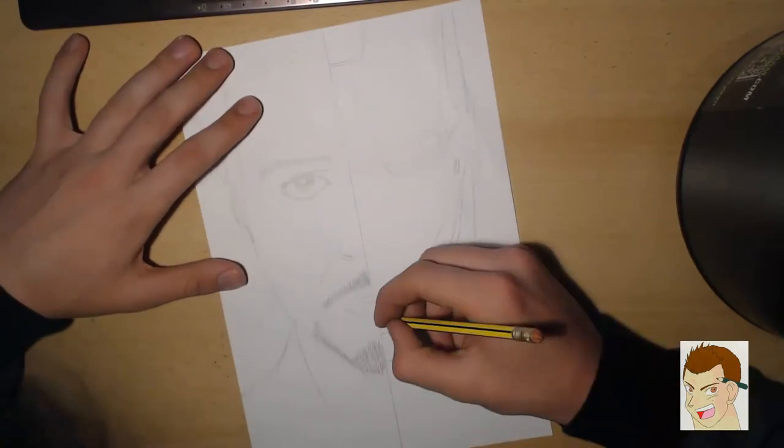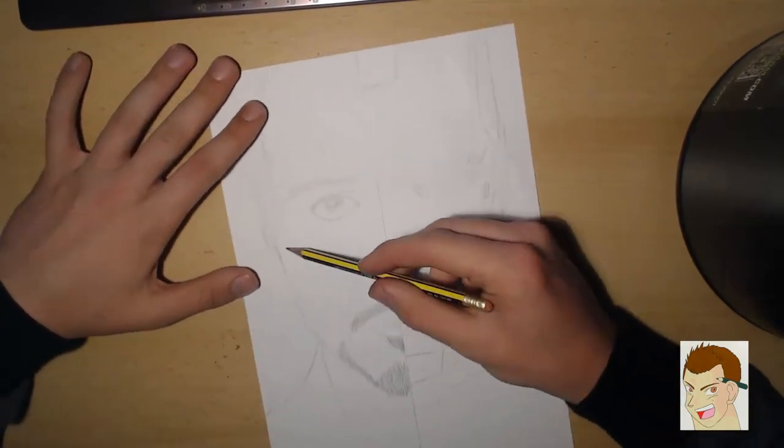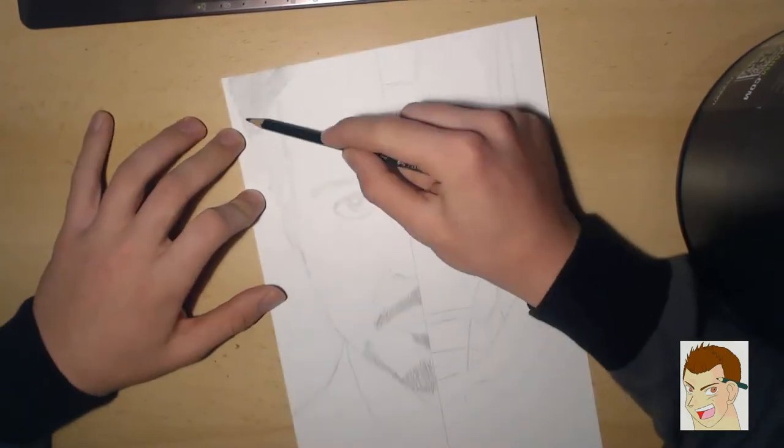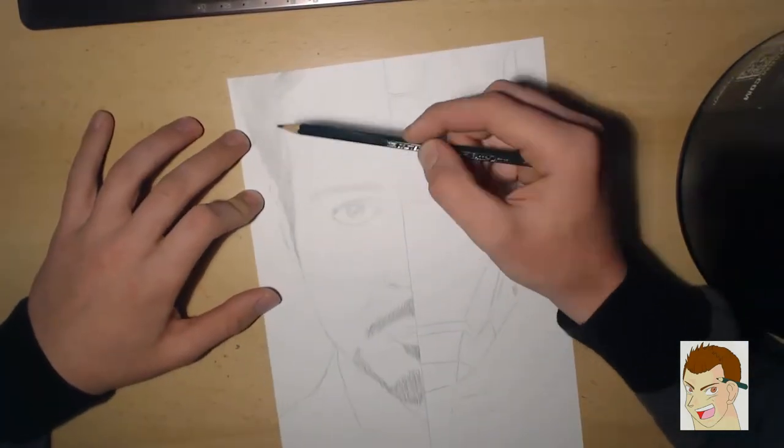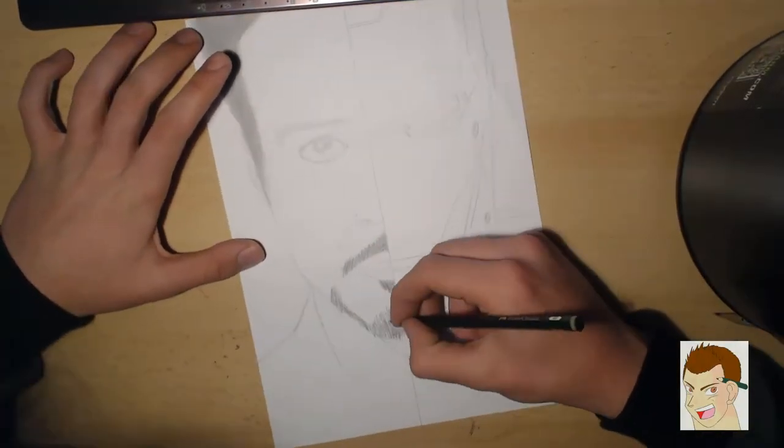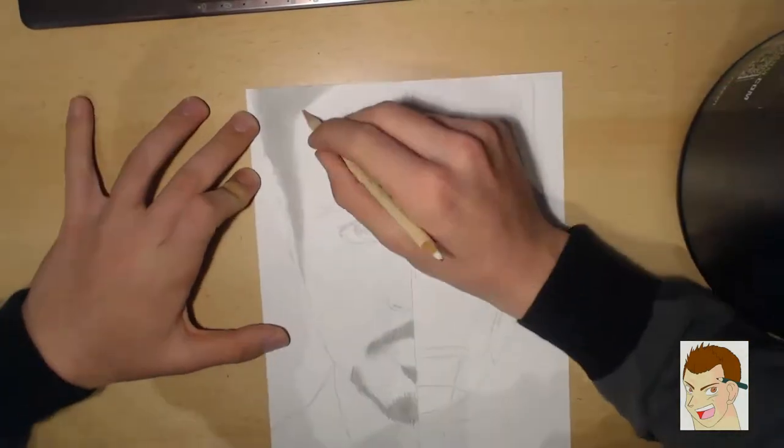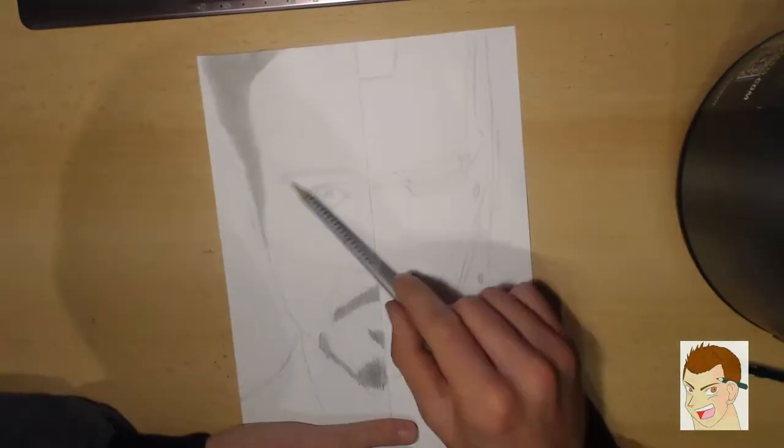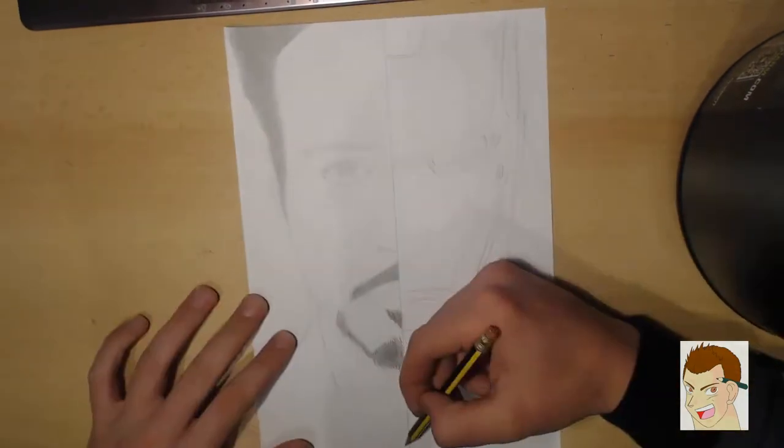The right part is of course the suit, the left part is Tony Stark or Robert Downey Jr. Depends how you want to see it. I used the NHP pencil for sketching up and B pencils for shading from 1B to 8B.